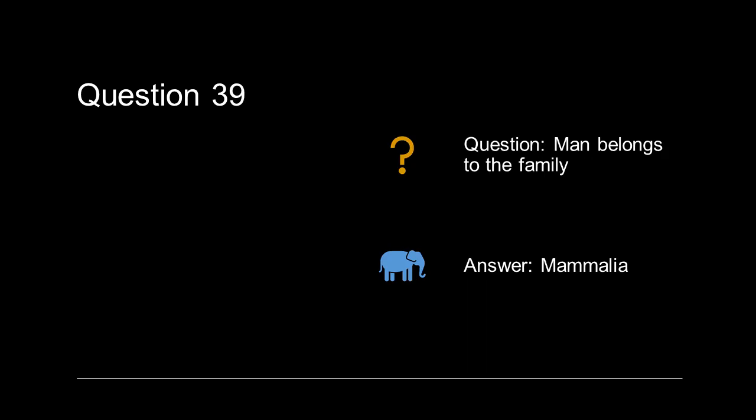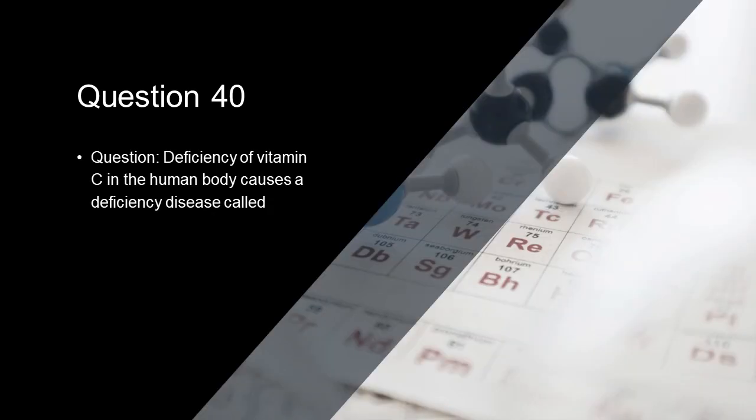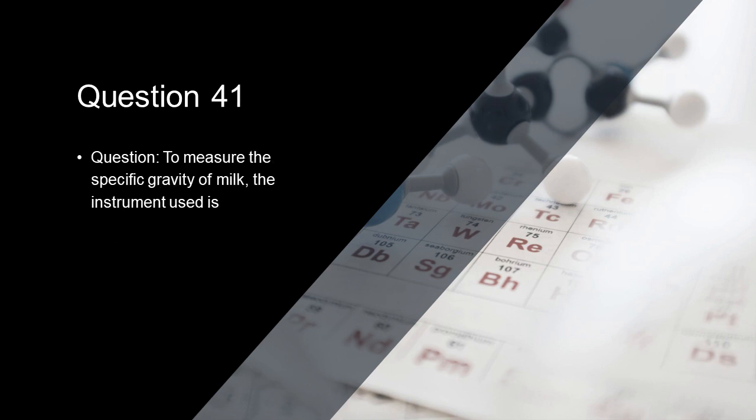Man belongs to the family mammalia. Deficiency of vitamin C in the human body causes a deficiency disease called scurvy. To measure the specific gravity of milk, the instrument used is lactometer.